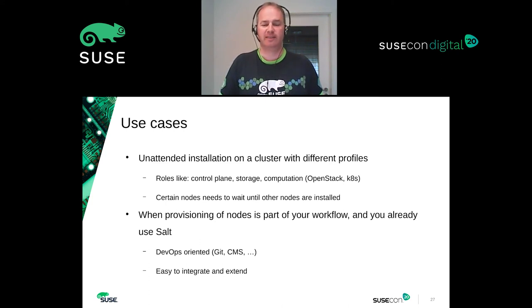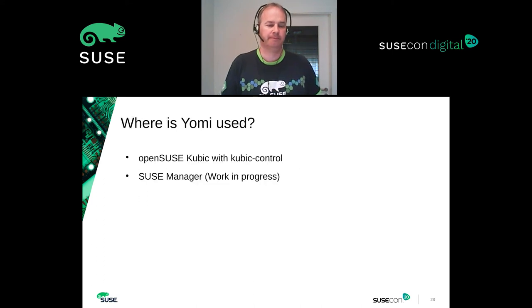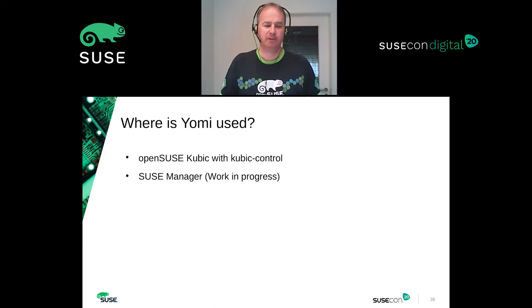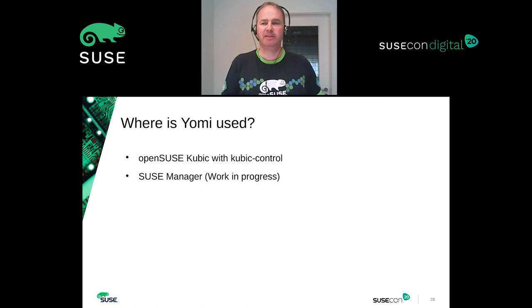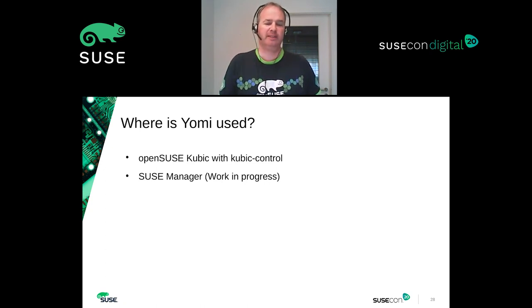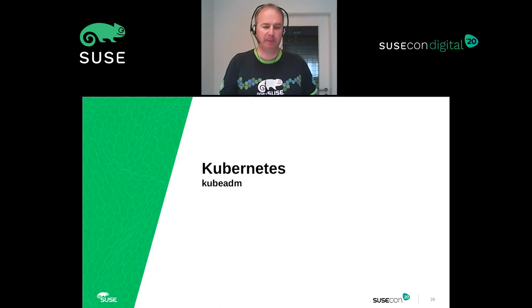Yomi also handles cases where certain nodes can only be installed and started after other nodes are installed. Yomi is currently a proof of concept for Kubic Control — for example, you can deploy the load balancer with it. You tell Kubic Control at the beginning to deploy a multi-master setup with a load balancer based on HAProxy. When the machine is installed with MicroOS, HAProxy will be installed, then it hands over to the normal Kubernetes deployment routine, and if a new master is added it's automatically added to the HAProxy. We are also working on integrating it into SUSE Manager as our enterprise product, which should be available in the next SUSE Manager version.